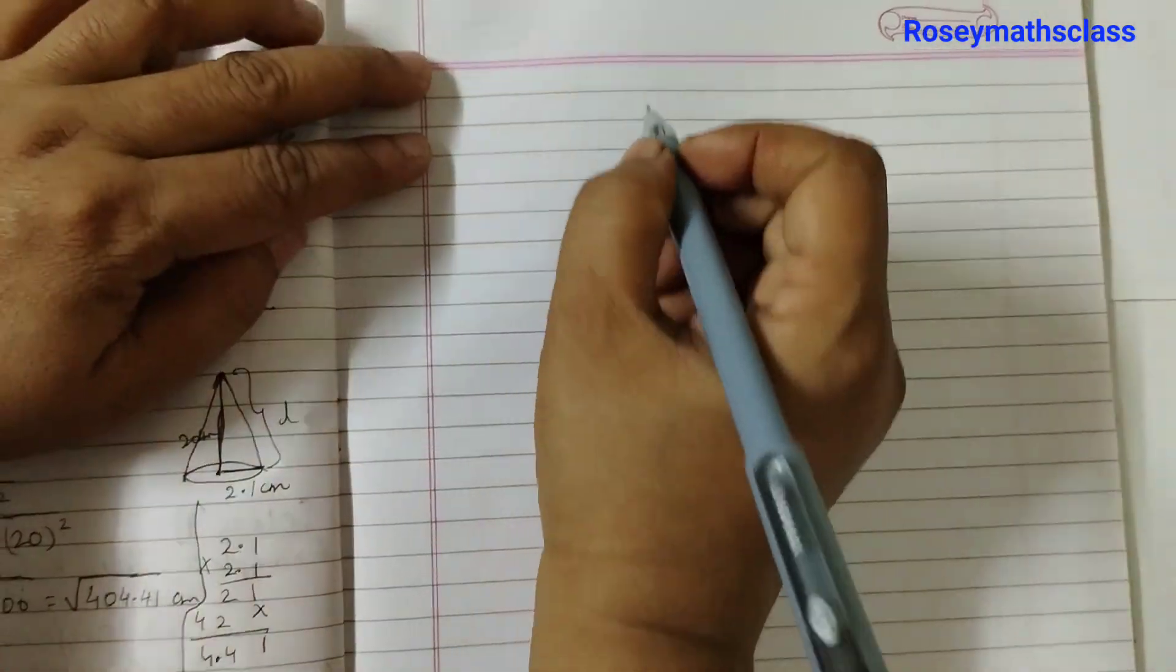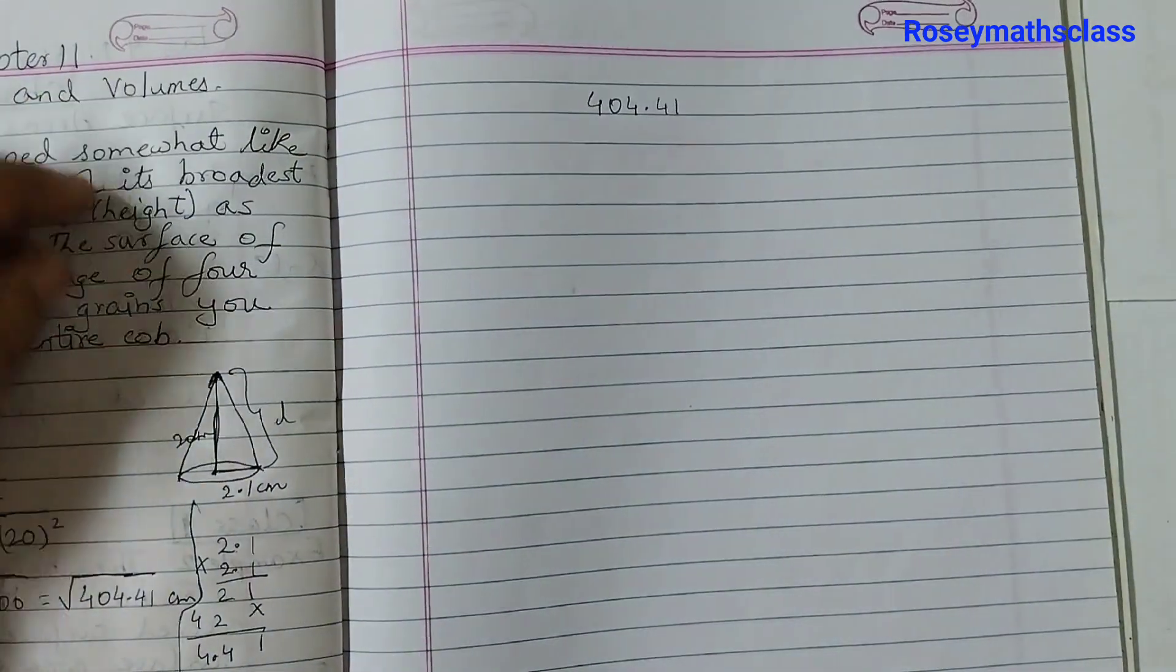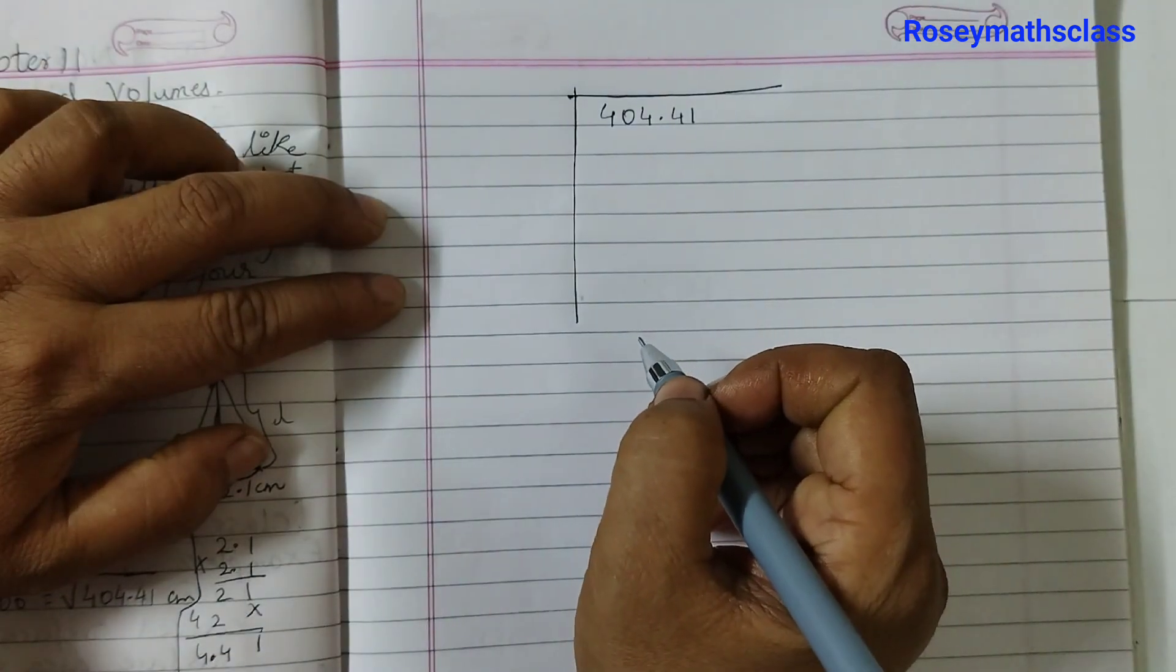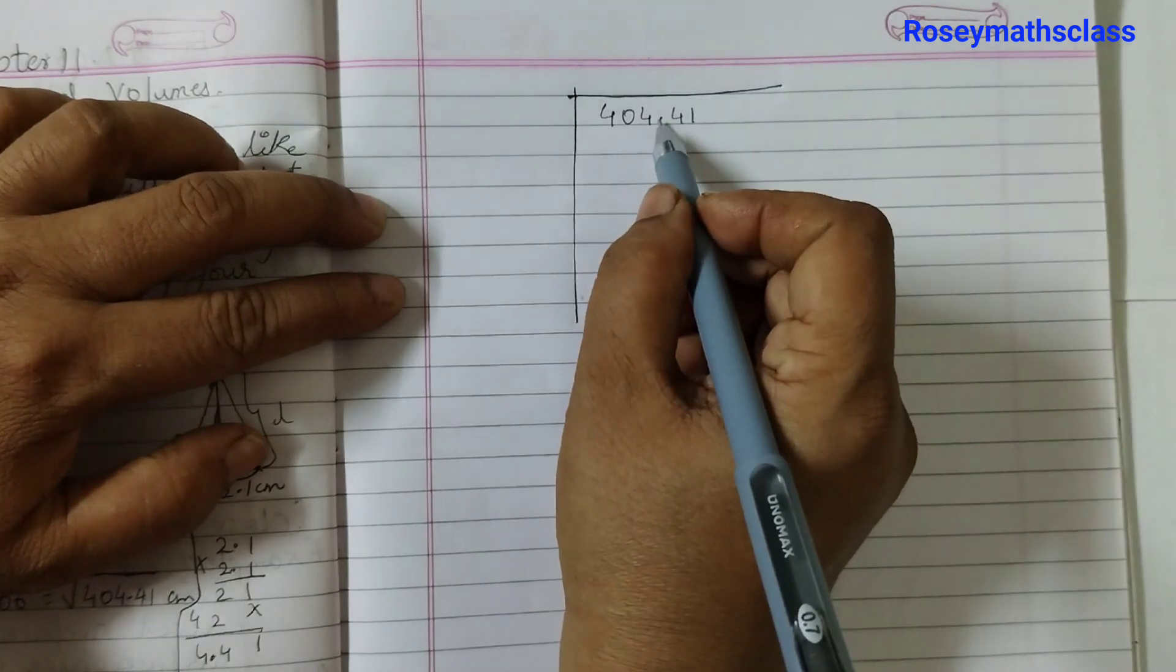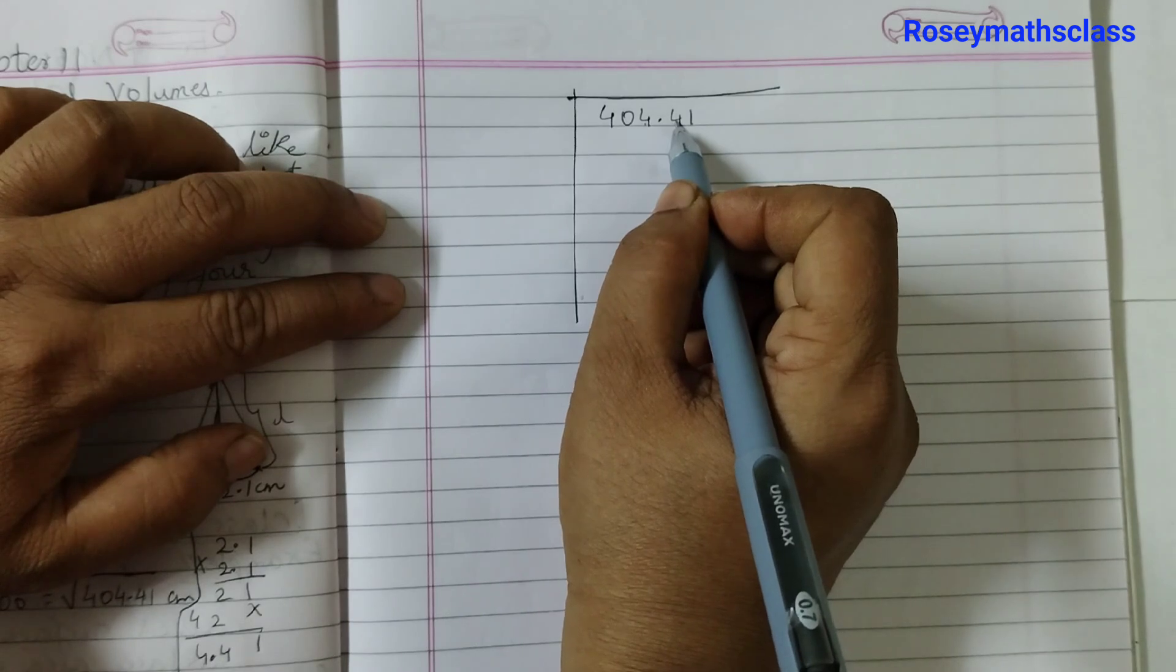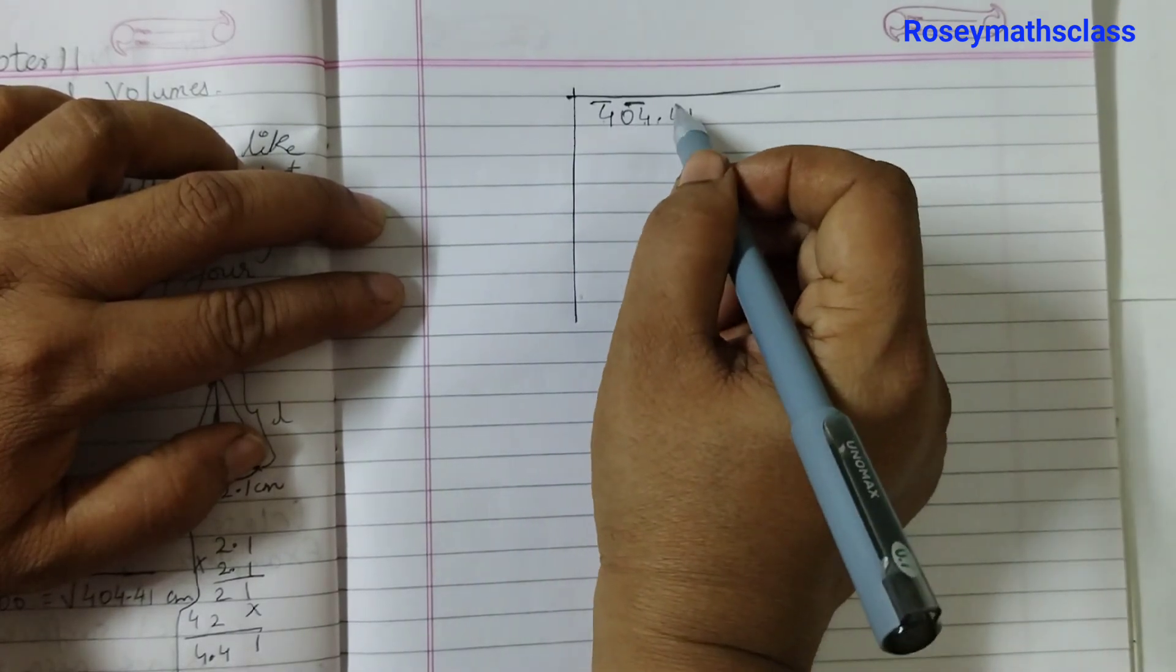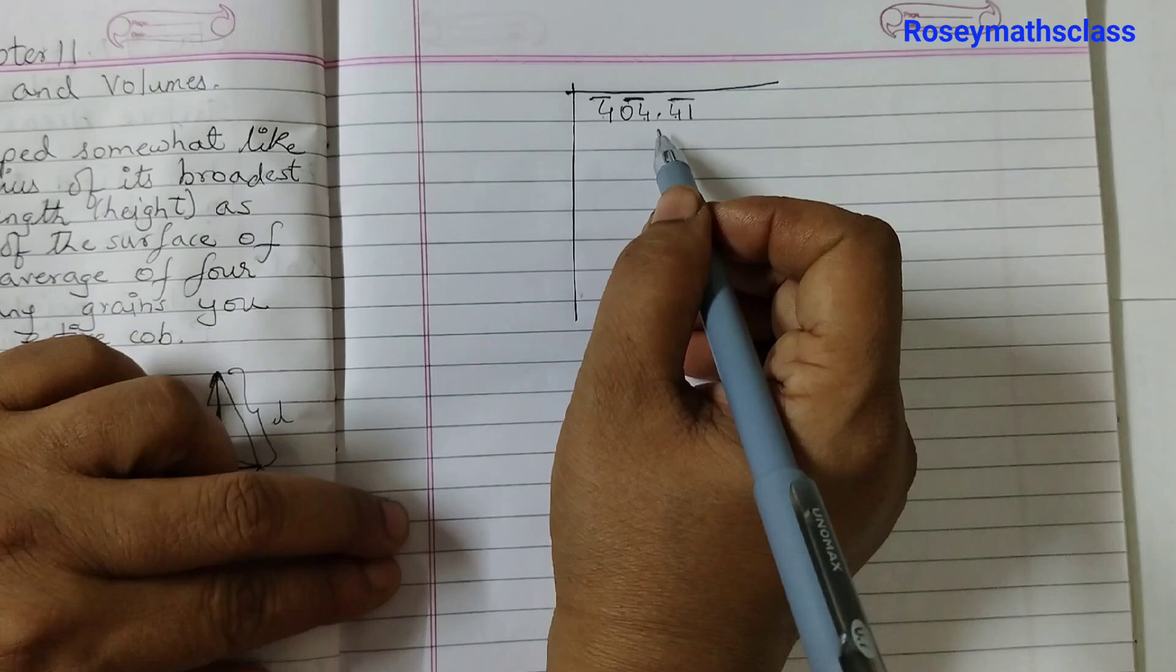So for the square root we will write the number 404.41. So you have to draw lines like this. Now place a bar over every pair of digits starting from the digit at 1's place. So 1's place we have 4 and after the decimal also we need to put a bar but it must be in pairs. After the decimal 2 digits so that is in pair again. That is your first step.